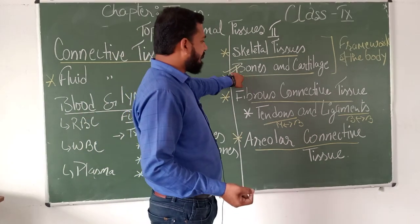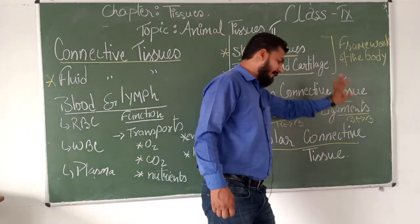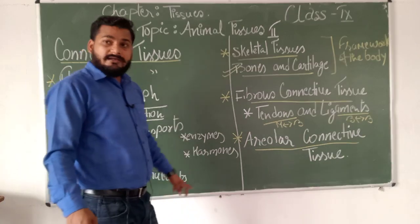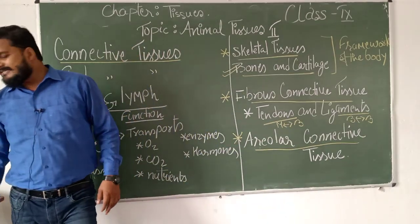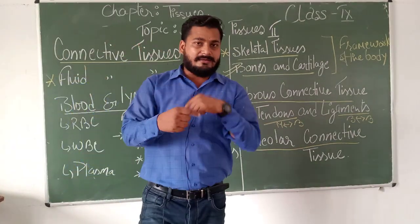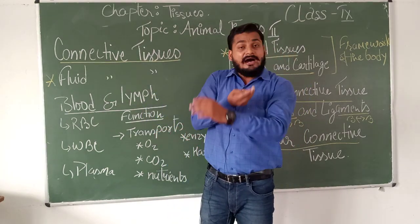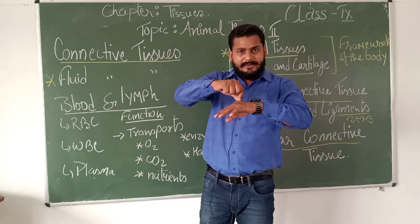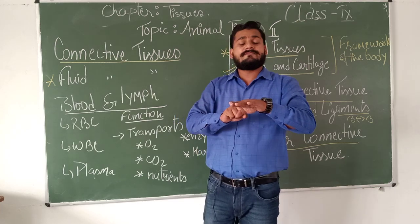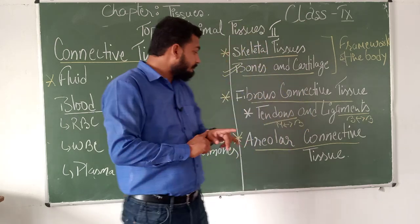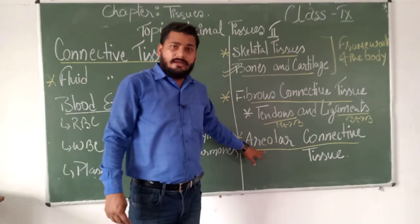Since these form part of the framework of the body, tendons and ligaments act as cementing material. The last type is areolar connective tissue. What areolar connective tissue does is it binds the skin with the muscles. There is a difference between skin and muscles — though we simply say we have muscles, the muscles lie under the skin. The upper surface is skin, made up of epithelial tissues, and under this there is muscular tissue. This skin to muscular tissue connection is bounded by areolar connective tissue.